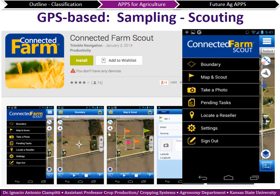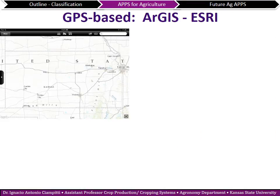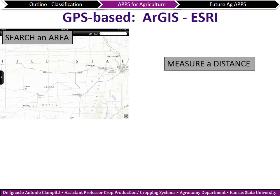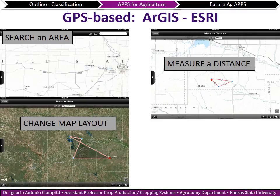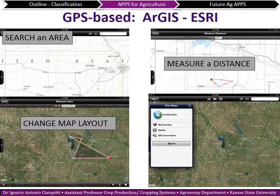With Connected Farm Scout, you can make a boundary, make a map, take a photo, and add pictures to specific points so anyone coming the next year can easily identify those locations. Note that on these scouting apps you'll need an account or subscription — some are free, some require payment. The ArcGIS S3 app is free — you have a US map, can calculate areas, search for specific field areas, measure distances, draw triangles or different shapes, and measure area. It has very nice features and connectivity, very easy to use for field estimations.